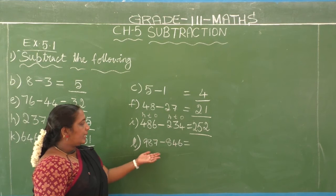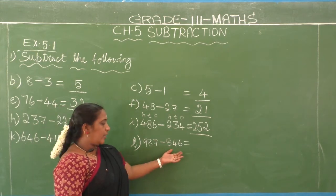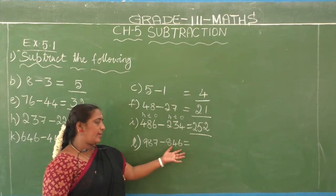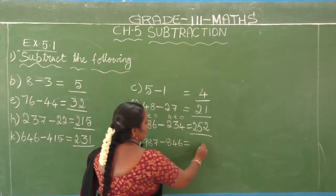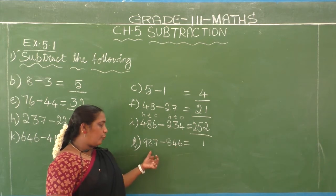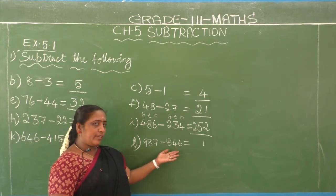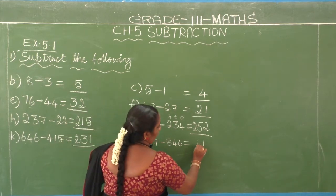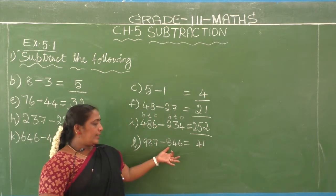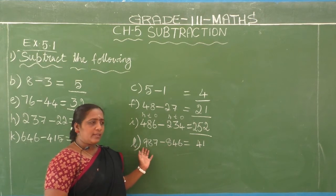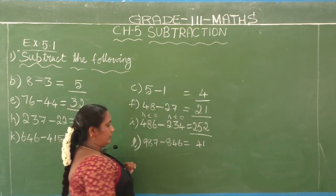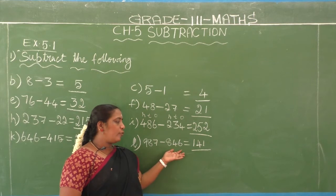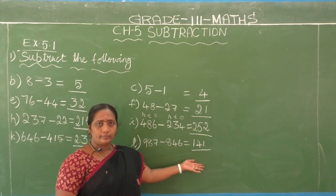L sum: 987 minus 846. Ones place: second number is 6, first number is 7. 6 after 7. Difference is 1. Tens place: second number is 4, first number is 8. 4 after 5, 6, 7, 8. Difference is 4. Hundreds place: second number is 8, first number is 9. 8 after 9. Difference is 1. So 987 minus 846 equals 141. Copy these sums in your classwork notebook.